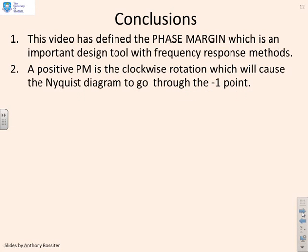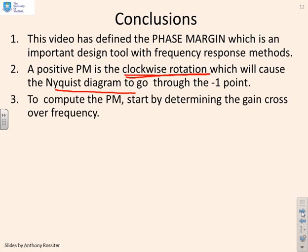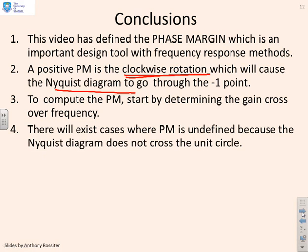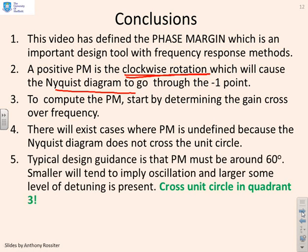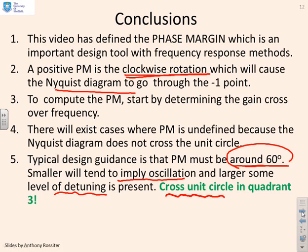In conclusion: this video defines the phase margin, which is an important design tool with frequency response methods. A positive phase margin is defined as the clockwise rotation which will cause the Nyquist diagram to go through the minus 1 point. To compute it, start by determining the gain crossover frequency — where |g(jω)| = 1. There will exist cases where the phase margin is undefined, i.e., if the Nyquist diagram never crosses the unit circle, but that's rare. Typical design guidance is around 60 degrees: smaller means likely oscillation, larger means likely detuning, and the Nyquist diagram should cross the unit circle in quadrant 3.